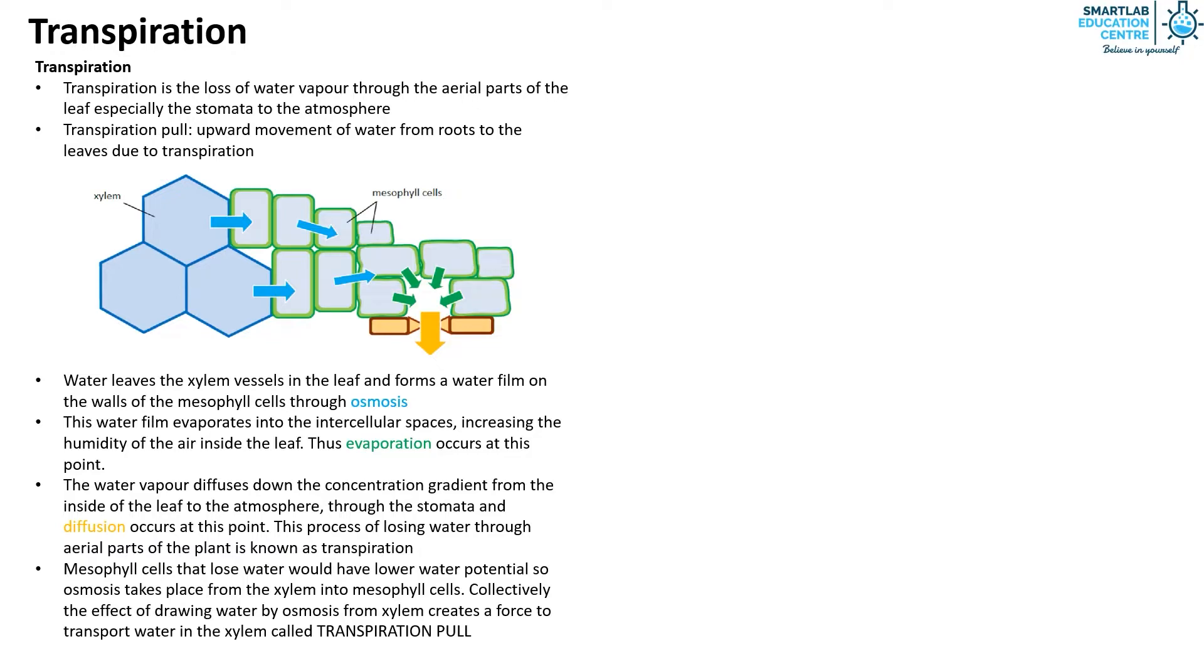Now let's take a look at wilting. Wilting occurs when the plant loses more water than it can absorb through its roots, meaning there is excessive water loss. Due to the lack of water, the leaf cells lose their turgidity.